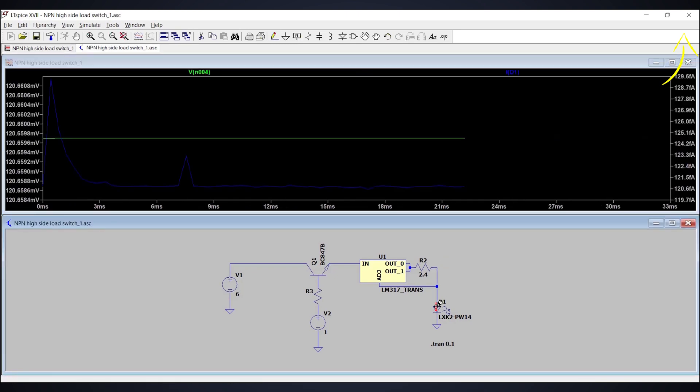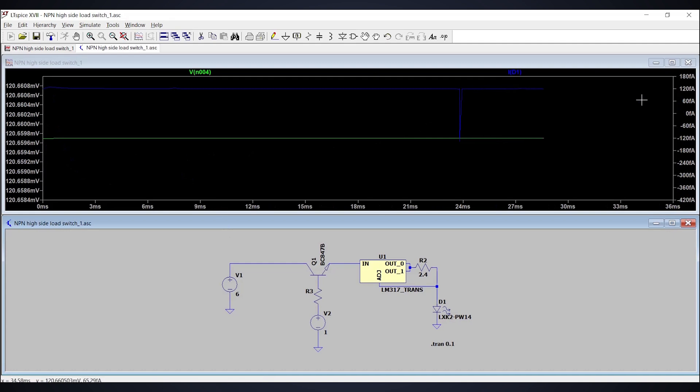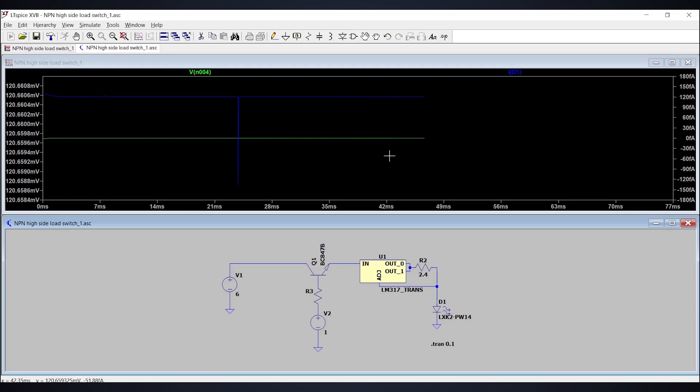Now in this simulation, even if we have given the 1 volt to the base of the BJT, it is still not turning on. Why? We have given the proper voltage right? Well there is a small catch over here.